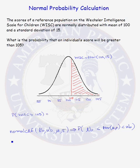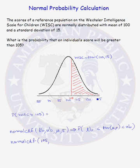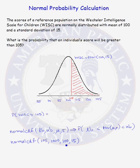For our particular problem, if we enter normalCDF, the lower bound is 105. Our upper bound needs to be a large number — more than three standard deviations away from the mean — so we'll pick 1,000. The mean of our random variable is 100 and the standard deviation is 15. That will give us the probability that a normal(100, 15) random variable is greater than 105.